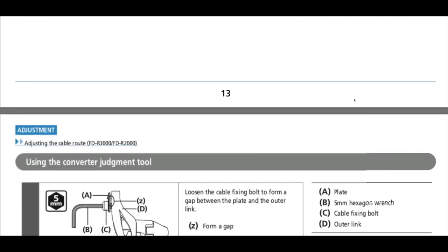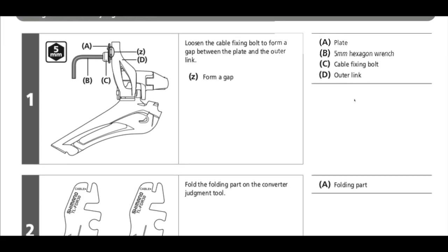First off, get your derailleur hooked up one to three millimeters above that big ring, then take your low limit screw and set that derailleur where the outer cage is hovering just over the big ring initially.